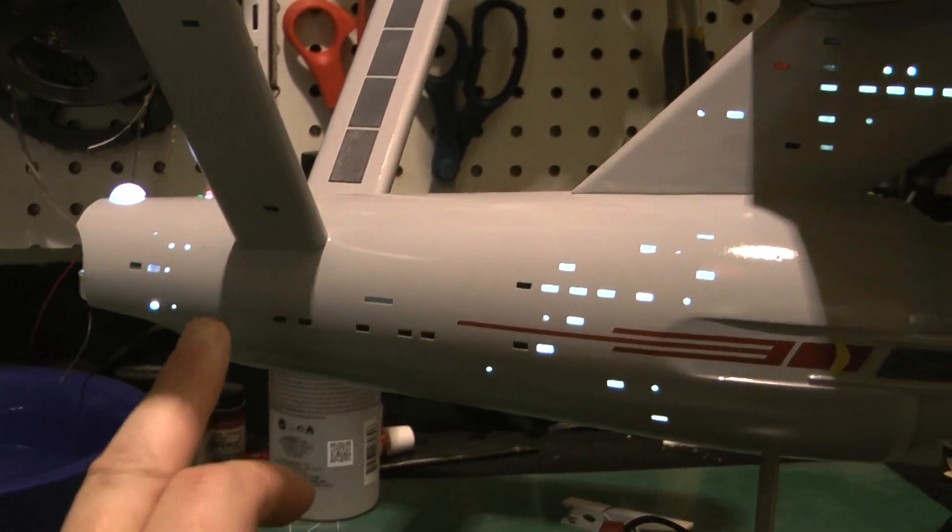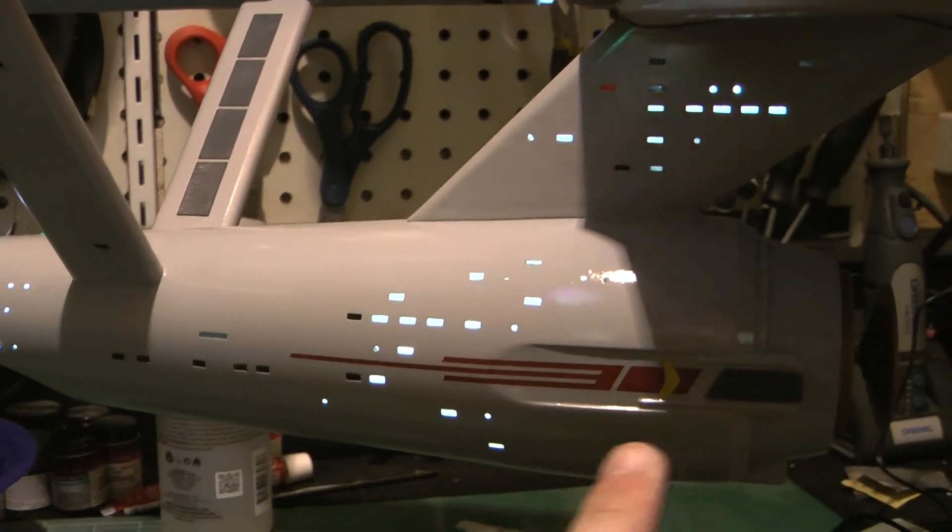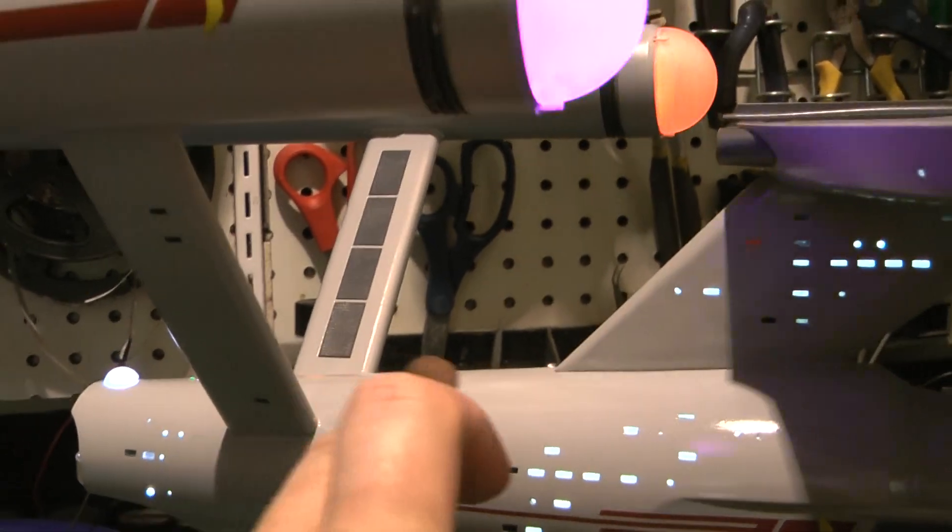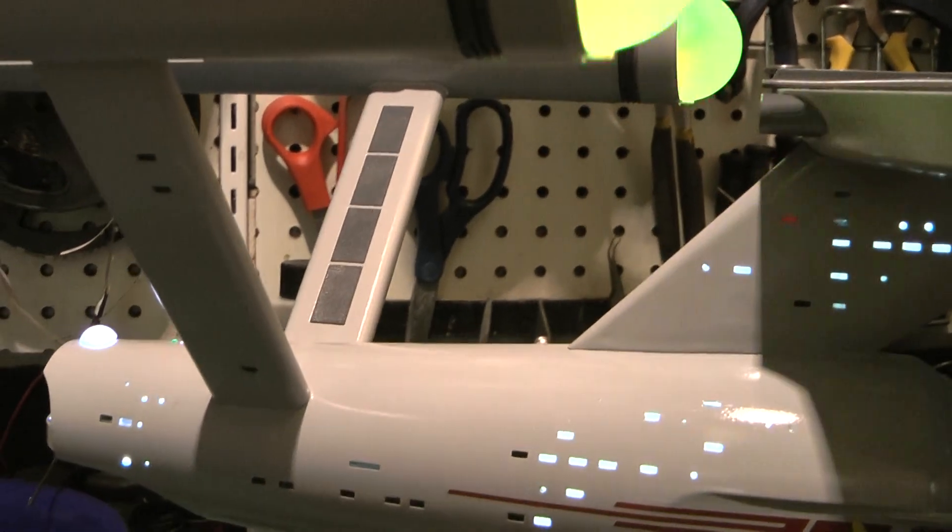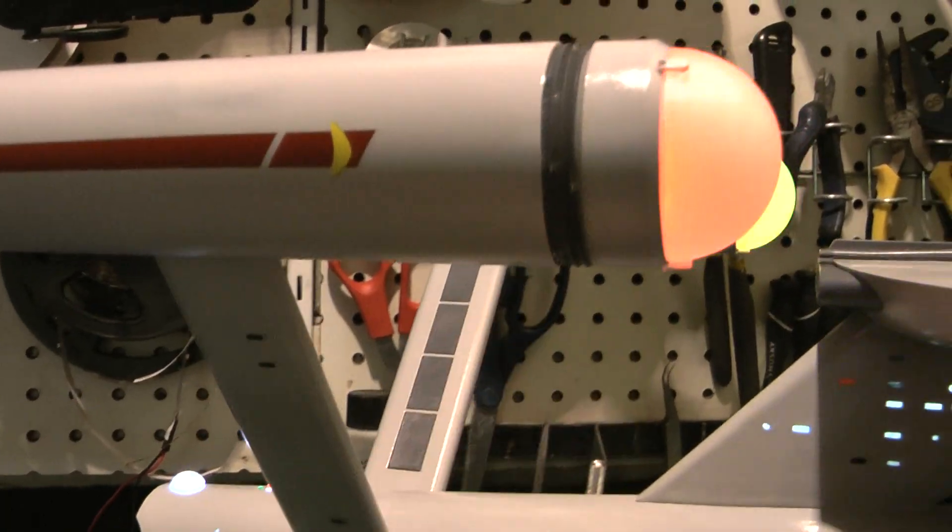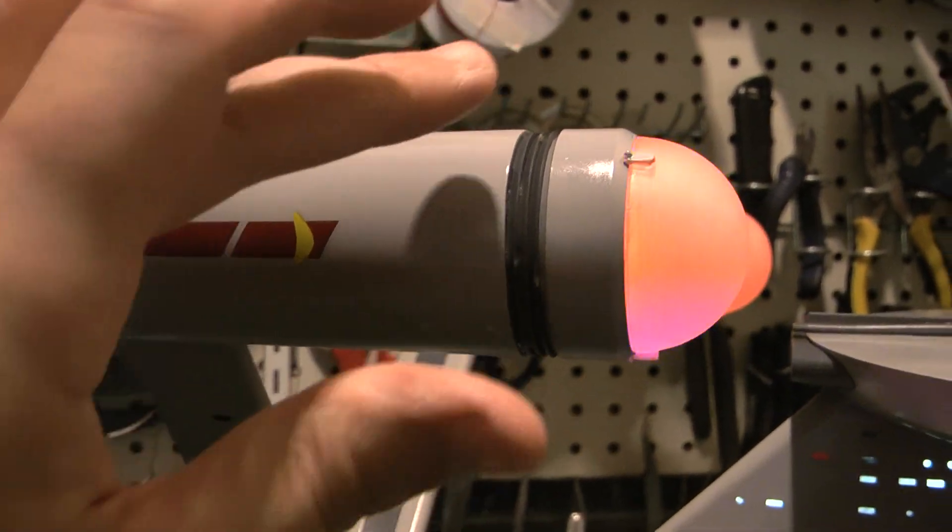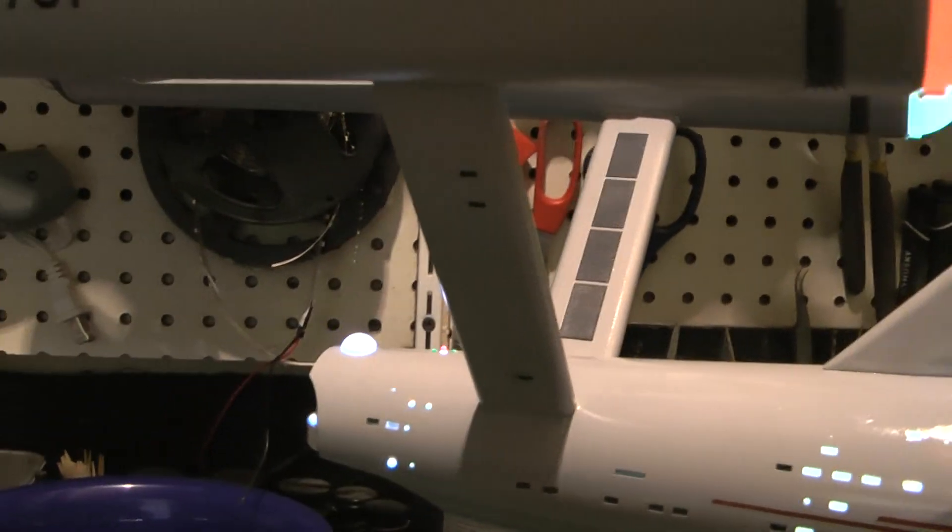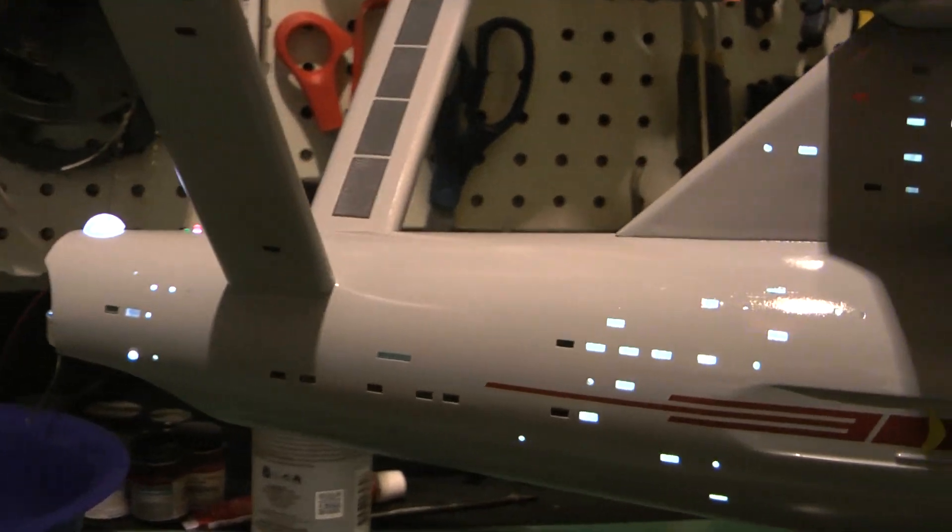So I've got a few more decals to put on: the little number markers that go along the side here, the pinstripe that goes down the back of the dorsal area, and then the ones that go up underneath the nacelles. Then I have to put those three little pads that go up underneath there.